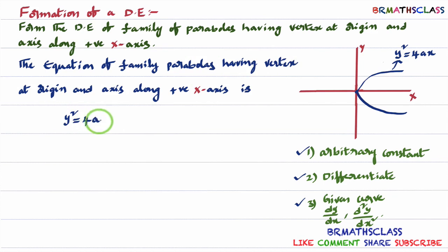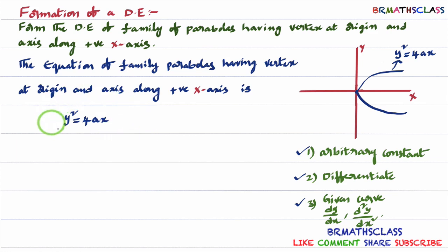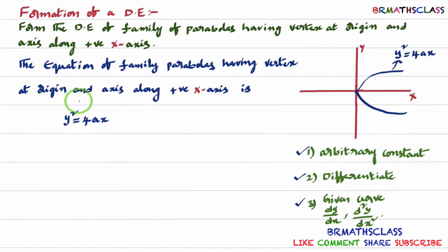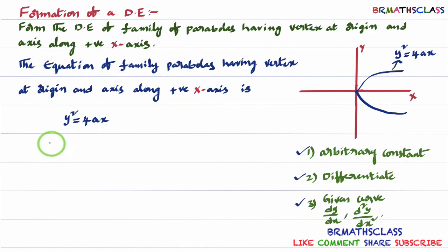We have written the statement in equation form. Once we have the equation, we identify the number of arbitrary constants. In y² = 4ax, how many arbitrary constants are there? Only one arbitrary constant — that is 'a'. Here 4 is a fixed constant. Since there is only one arbitrary constant, we can differentiate this only one time.